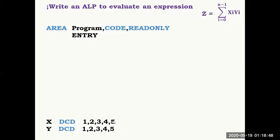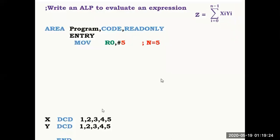Each value is 32-bit. The computation proceeds: 1×1=1, then 2×2=4, 4+1=5, then 3×3=9, 5+9=14, and so on. You are multiplying two numbers and adding the result to the previously accumulated value stored in one of the registers. The count n is initialized to 5 since there are five numbers.